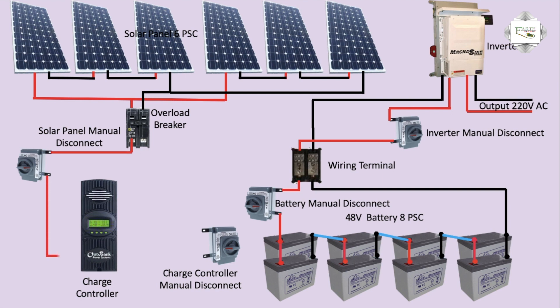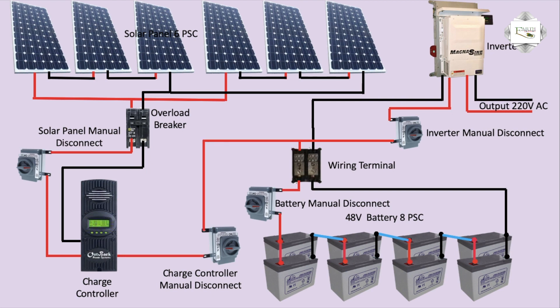The solar panel connects through the manual disconnect switch to the charge controller. The charge controller outgoing positive and negative connect to the manual disconnect switch, with positive terminal to positive wire and negative terminal to negative wire connection.